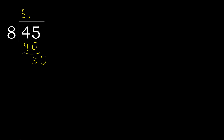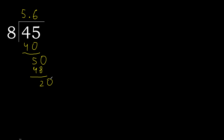8 multiplied by 7 is greater, so multiplied by 6 — 48 is not greater. Subtract. Complete. 0 point.